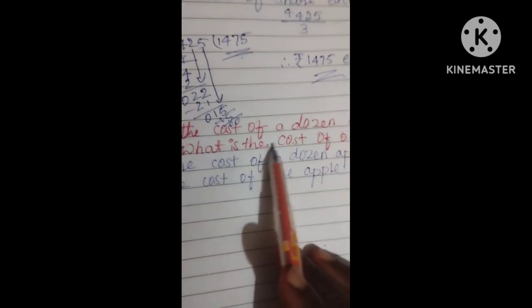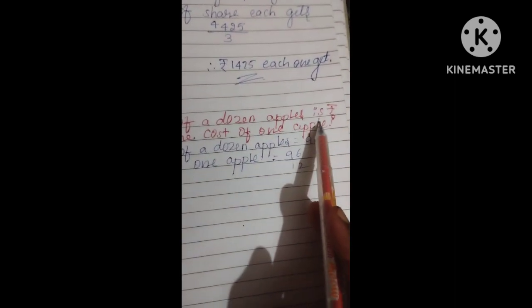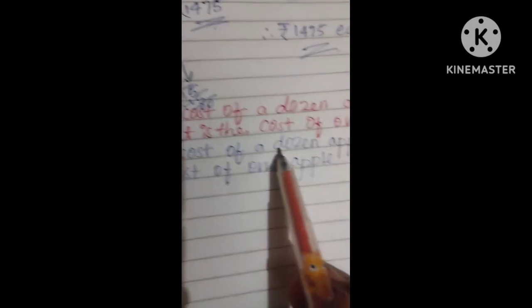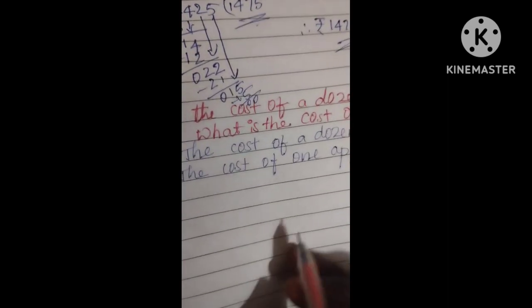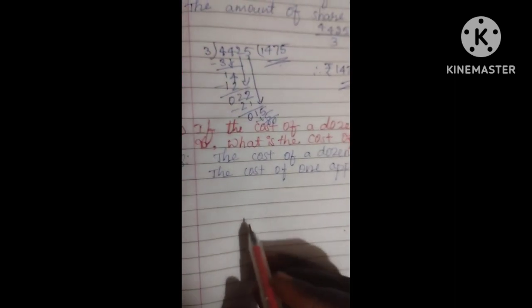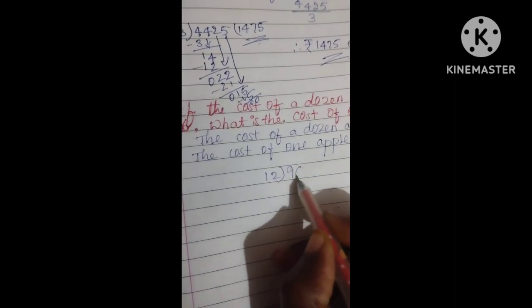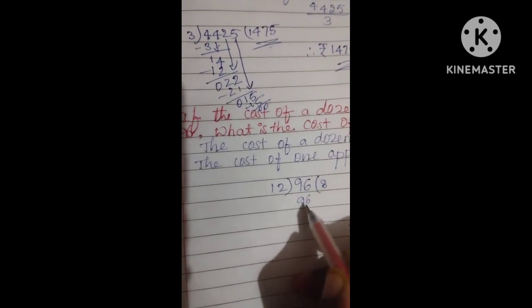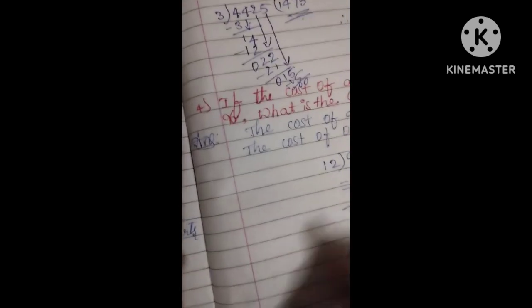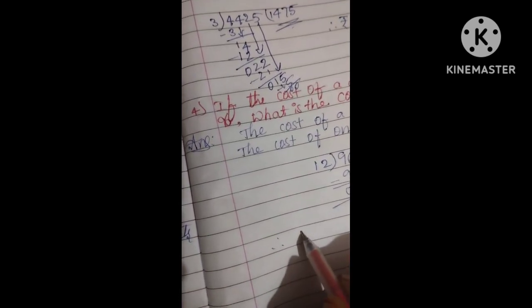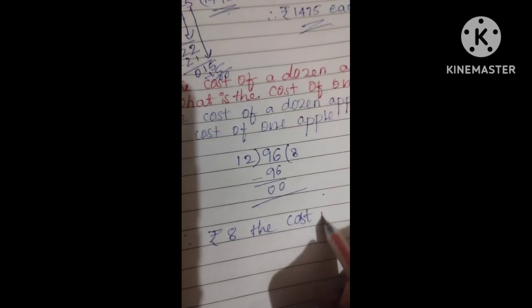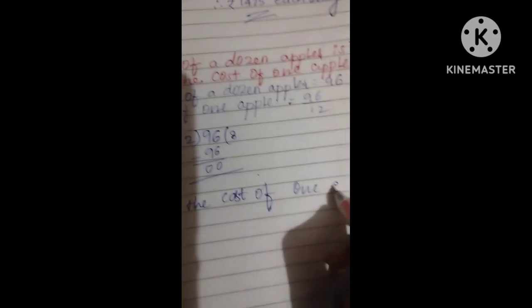Question 4: If the cost of a dozen apples is rupees 96, what is the cost of one apple? 1 dozen is equal to 12. So we do 96 divided by 12. 12 eights are 96, minus 96 gives 0. The cost of one apple is rupees 8.